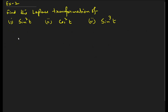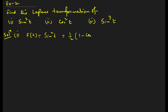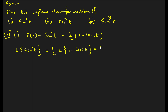Next let us take another type of problem: sin²(t). There is no Laplace formula for sin²(t) directly, so we rewrite it using the identity sin²(t) = (1/2)(1 − cos(2t)). Then we take the Laplace transformation: (1/2) times the Laplace of [1 − cos(2t)]. The Laplace of 1 is 1/s, and of cos(2t) is s/(s²+4).